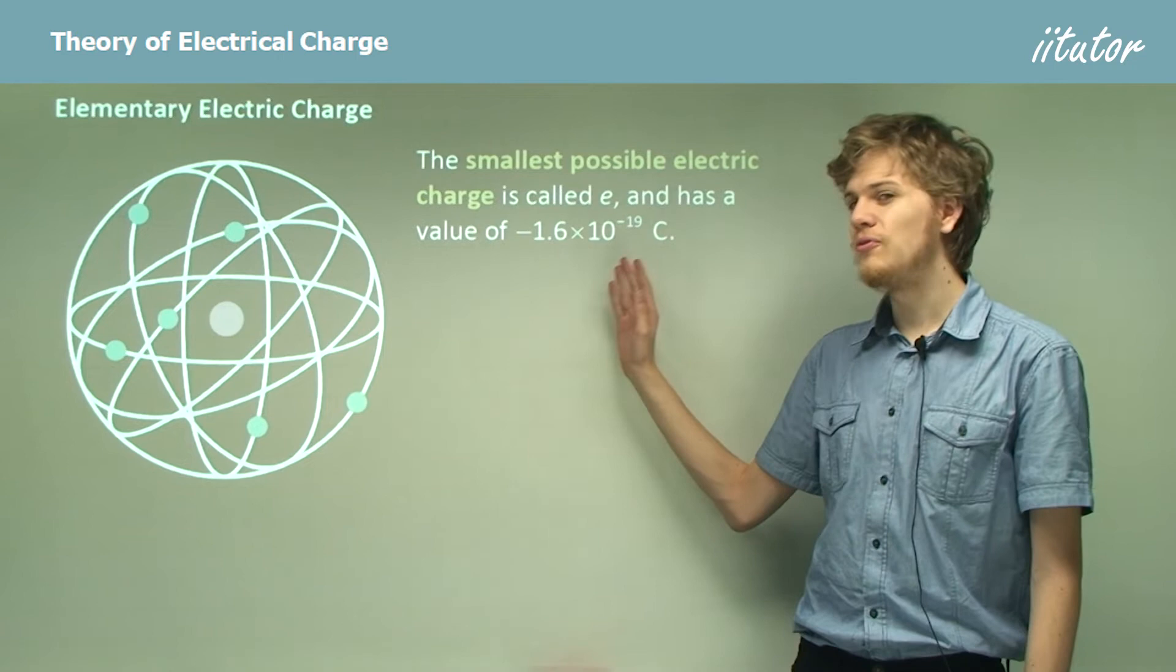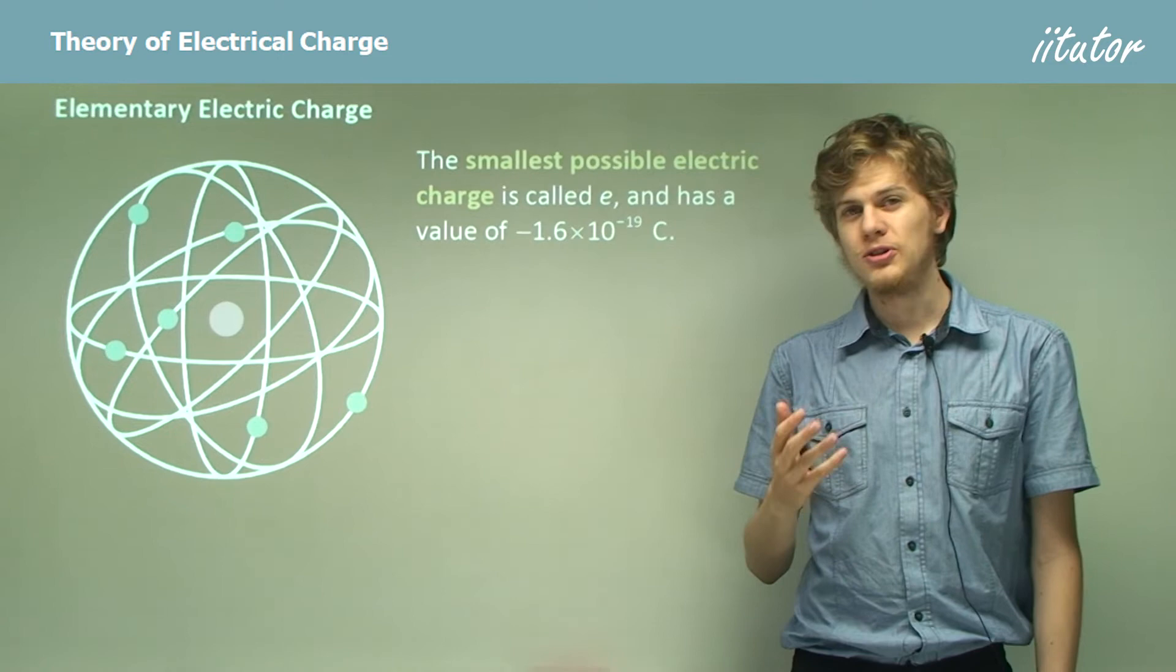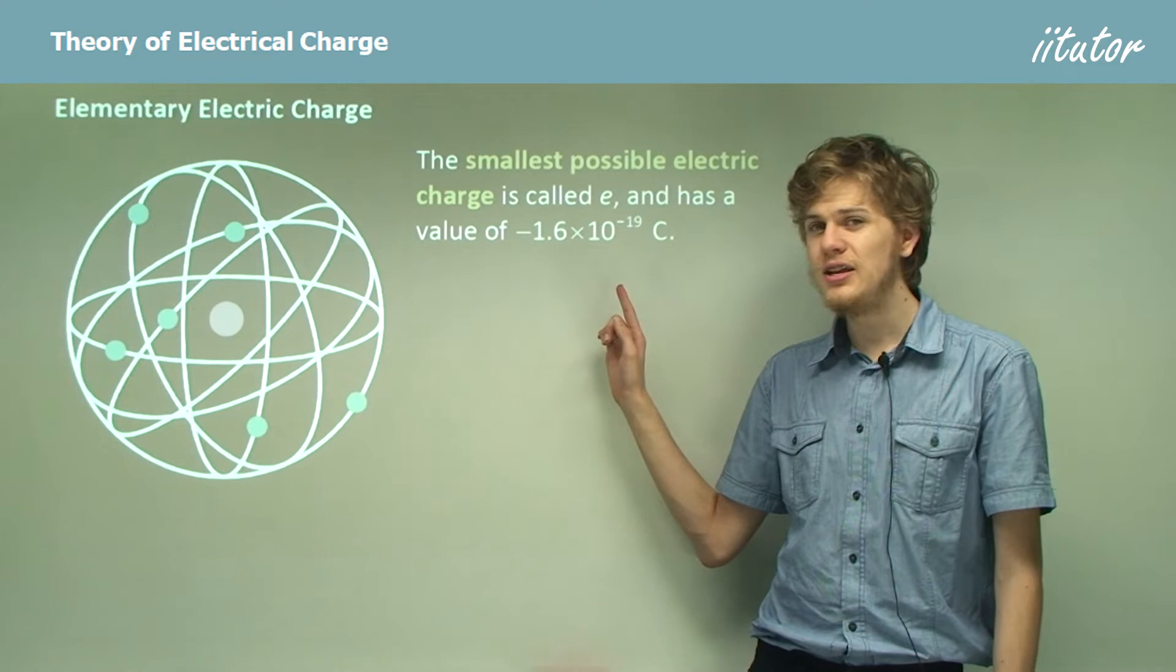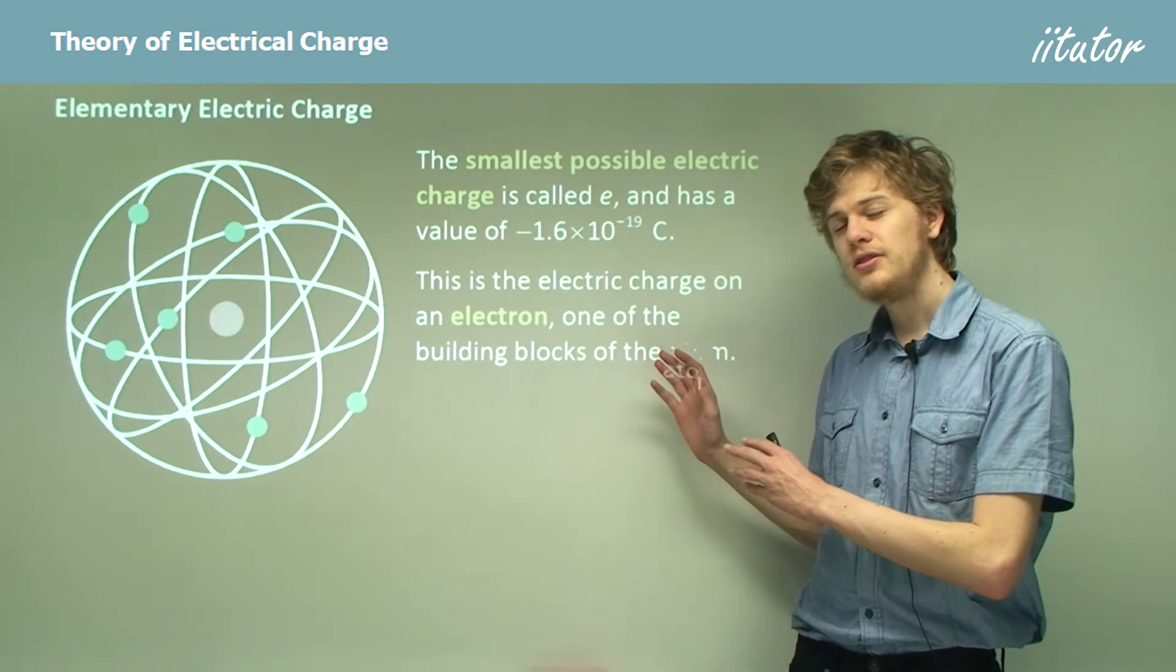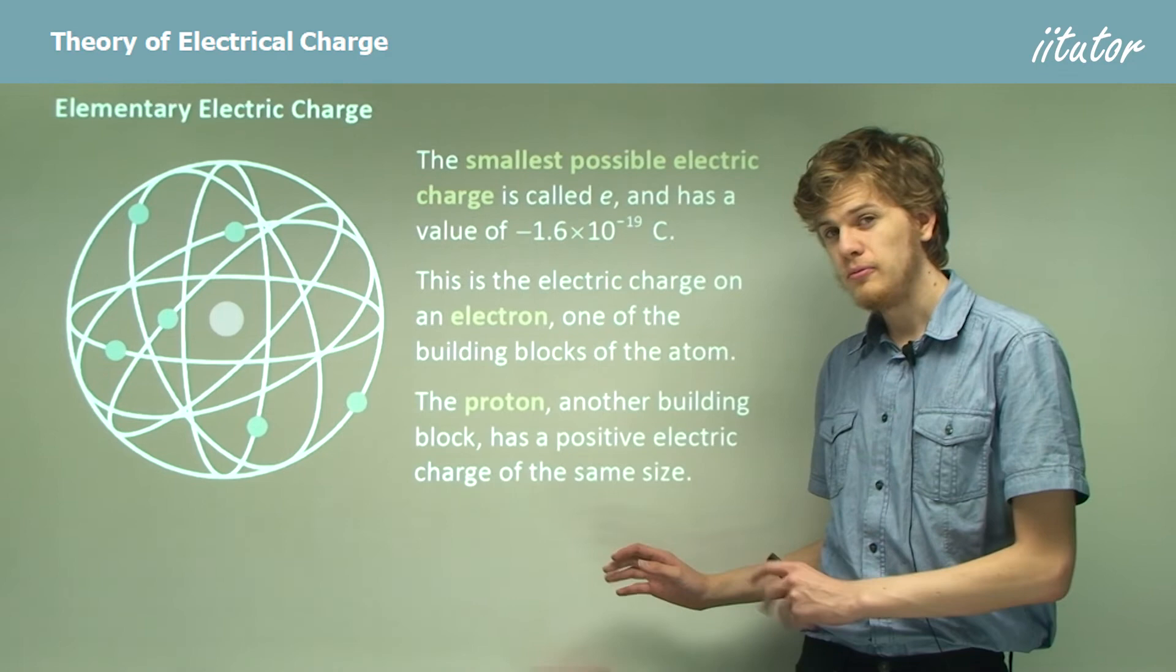So this value is called e, or the elementary charge, and it has a value of 1.6 times 10 to the minus 19 coulombs. If we were to write it out in full, we would need 19 zeros before the 1 6. So it's a very very small amount of electric charge indeed. This is the electric charge on an electron, which is one of the constituents of the atom.